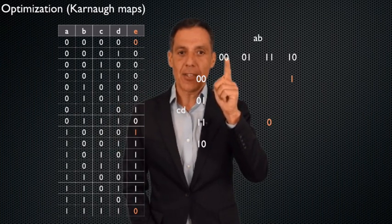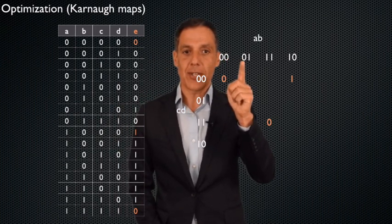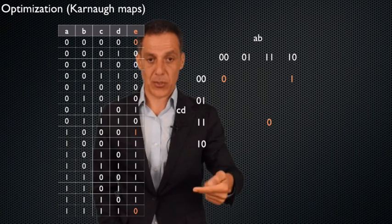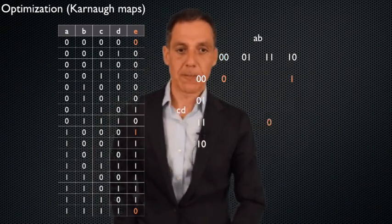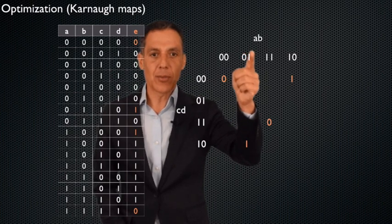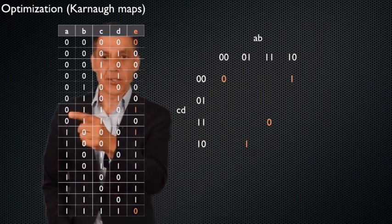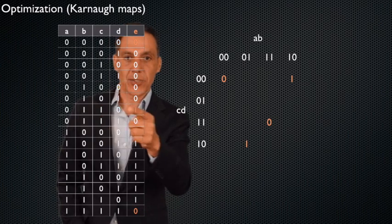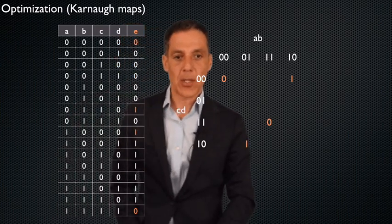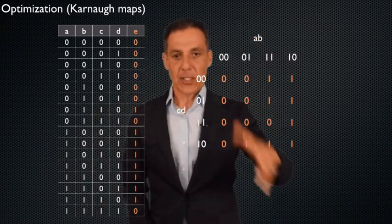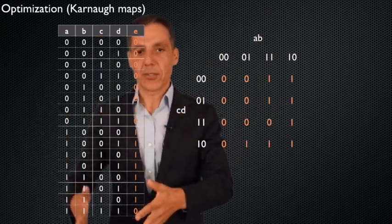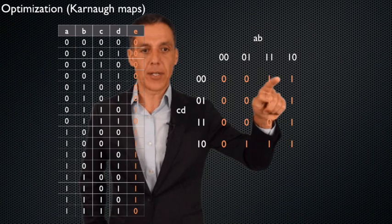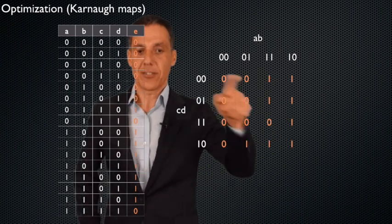Notice that the second zero and the first zero are the same, the second one and the first one are the same — that's not an accident. We're going to take advantage of that structure. Let's do one more: zero, one, one, zero. That corresponds to zero, one, one, zero — that's a one, so I put a one right there. There's a direct mapping from this one-dimensional truth table to this two-dimensional truth table. All the information is here: I want the circuitry to be one for these specific input combinations and zero everywhere else.